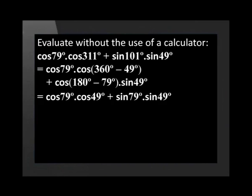By using the reduction formulas, we get cos 79° times cos 49° plus sin 79° times sin 49°. Now we can again use the compound angle formula for cos so that we have cos(79° - 49°), which is equal to cos 30°. And this is a special angle, which is equal to square root 3 over 2.